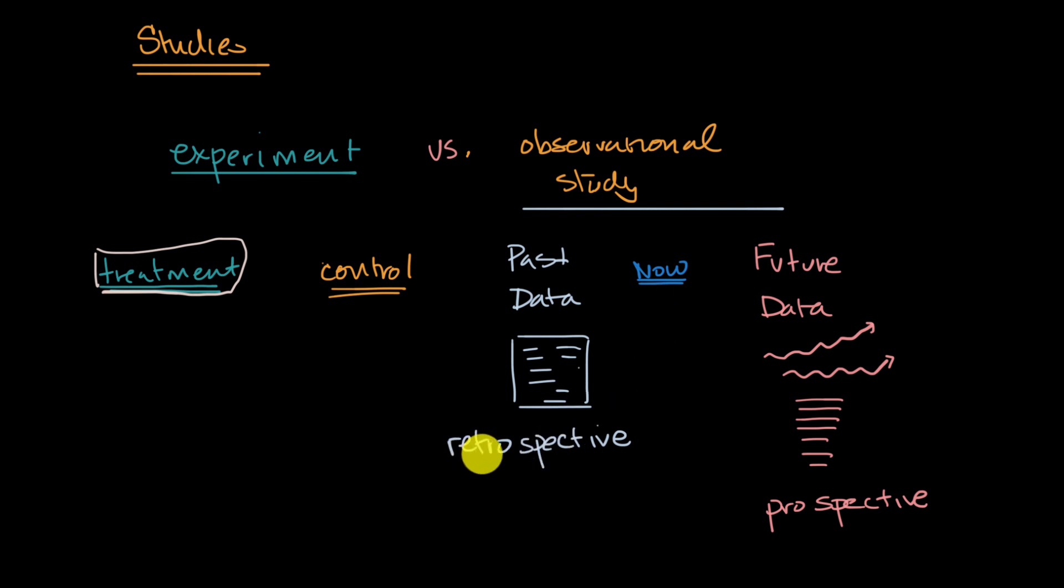Well, it's tempting to call it something with a prefix and then spective, so it all matches. But it turns out that the terminology the statisticians will typically use is a sample survey. Sample survey. That right now, you're going to take a hopefully random sample of individuals from the population that you care about, and you are just going to survey them right now and ask them some questions or observe some data about them right now.